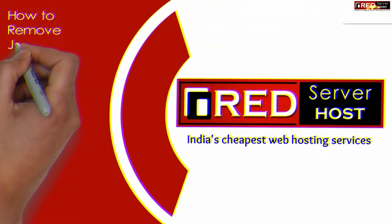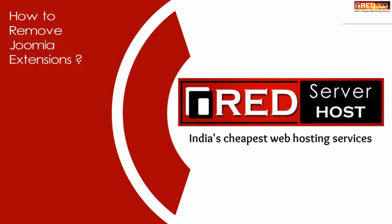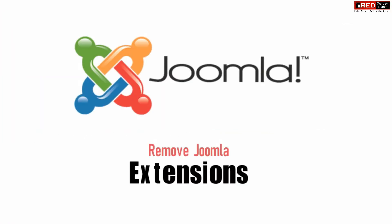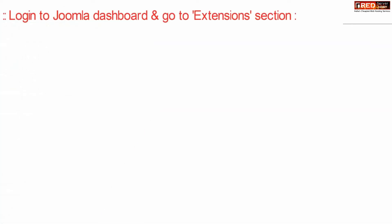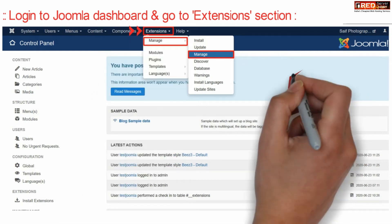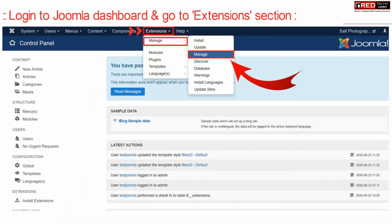Today in this video we will learn about how to remove Joomla extensions. If you want to remove Joomla extensions from your Joomla website, first of all login to the Joomla dashboard and then go to Extensions, then Manage, and then again Manage.